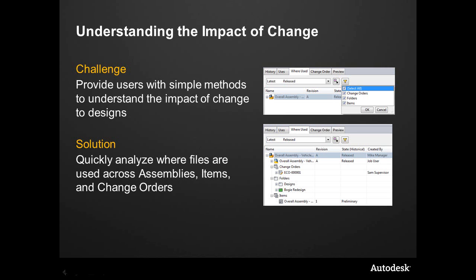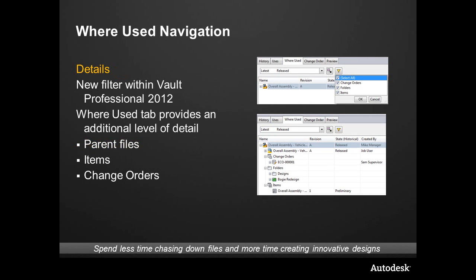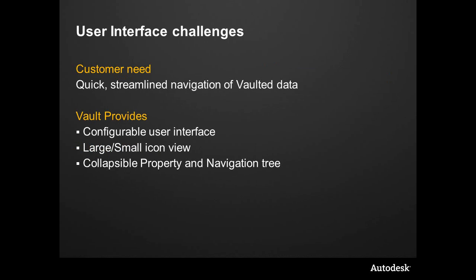Analyzing the impact of change — should I change this, should it be revised, should it be a whole new part number — is part of the data management workflow and it can take up time. For a designer, engineer, drafter, or someone charged with CAD work, finding out where something is used takes time. Now from one location, the Where Used tab, we can enable a filter and see every place that a particular file is accessed throughout the entire vault. Where Used navigation allows us to take that filter and show everything inside of Vault.